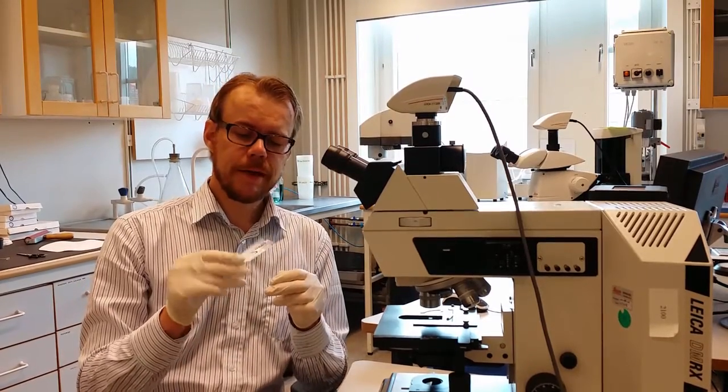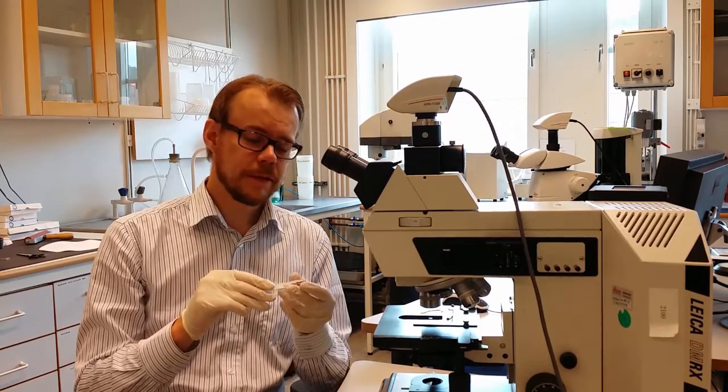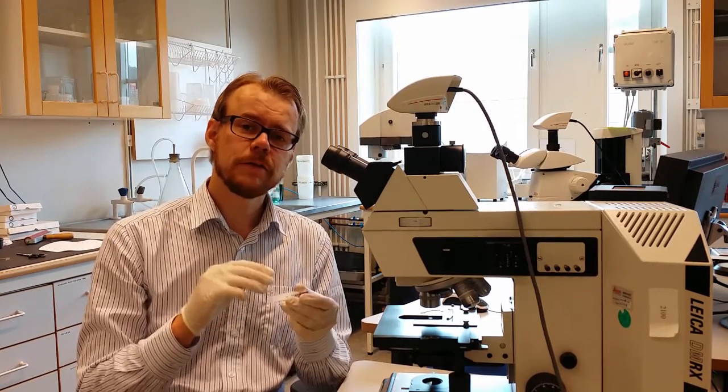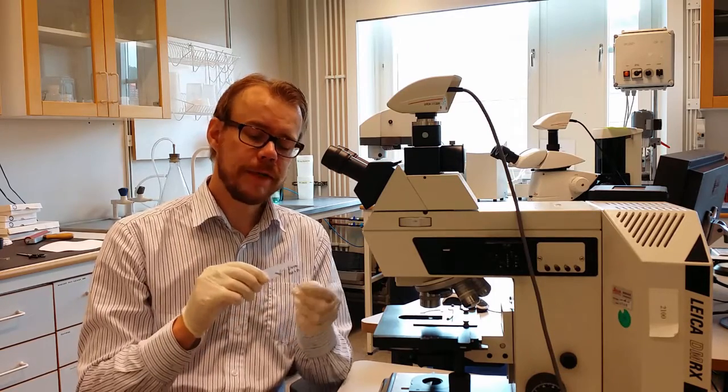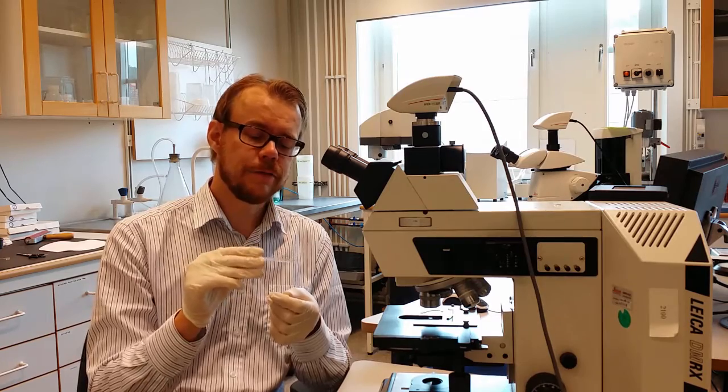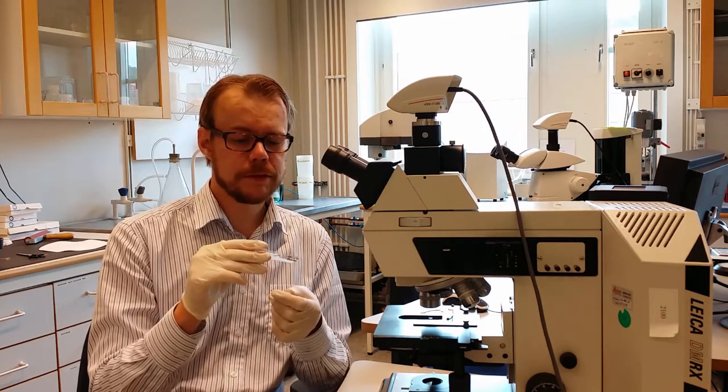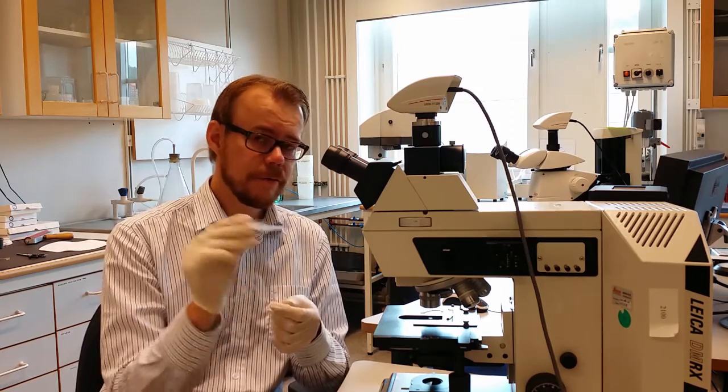I have already prepared a sample that's been ultramicrotome cut. The sample is a paper that we have cut in thin slices. And we are going to look at the cross section of that. Because on top of the paper a printed silver nano ink pattern is made. And we want to study that. And the first step is to do light microscopy on it. So I already made this sample in beforehand. And we are going to put this in.